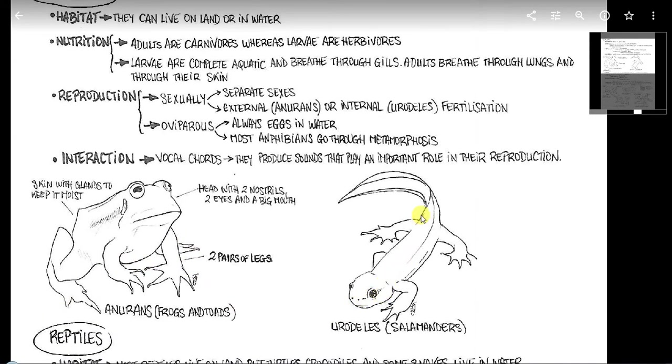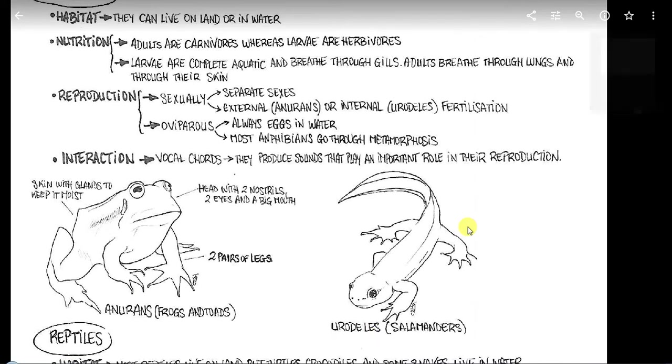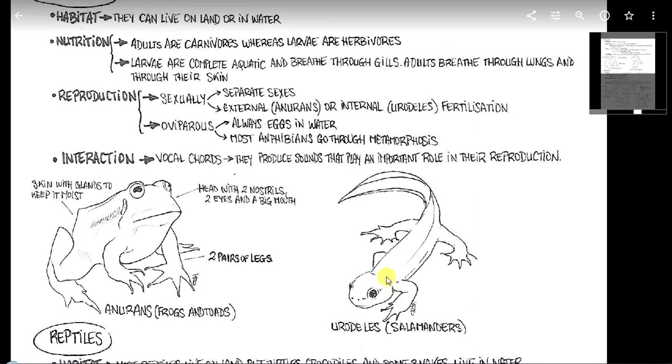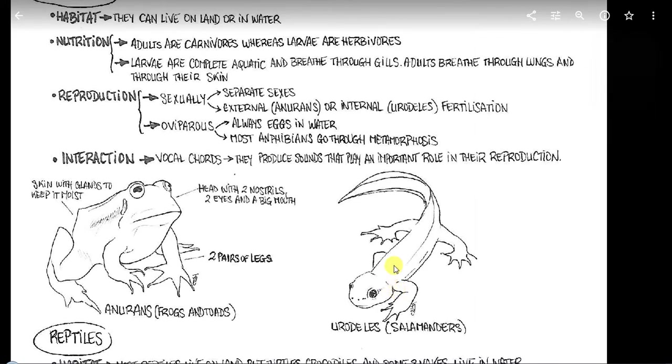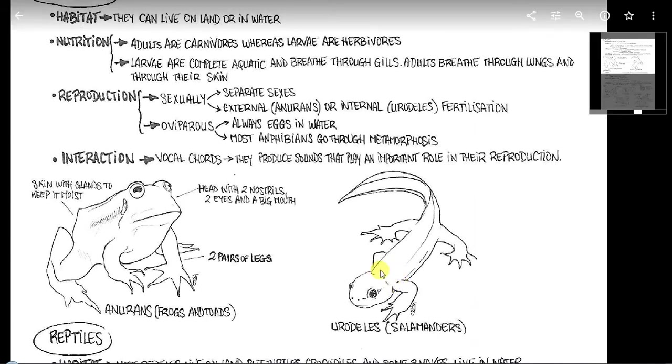Los urodelos, pues como vemos, tienen rabo, tienen cola. La rana lo pierde a lo largo de la metamorfosis, pero los urodelos no. Y hay un tipo de urodelo, que son los tritones, que tienen las branquias, las tienen visibles porque no las pierden. Son acuáticos, no abandonan el agua.